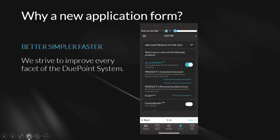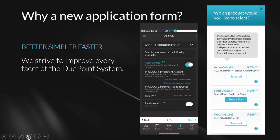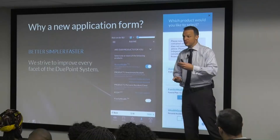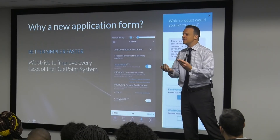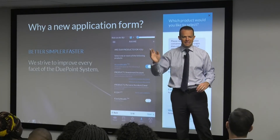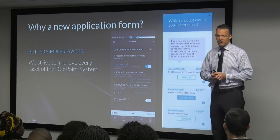This is the current application form on the mobile app. The page we're looking at in particular is the product selection page. Now look at the new one. Do you see the difference? The designers are trying to appeal to the users. You can immediately see that it is simpler and it should be faster for people to use. The application form should be usable so that there doesn't need to be any input from the lead wealth engineer. That is the main reason why we've changed the application form.